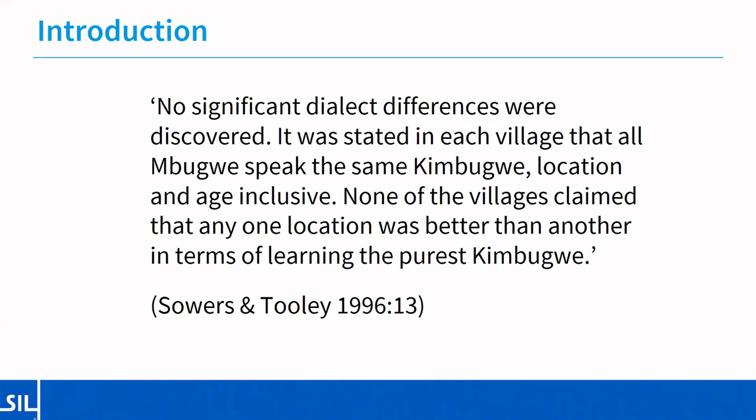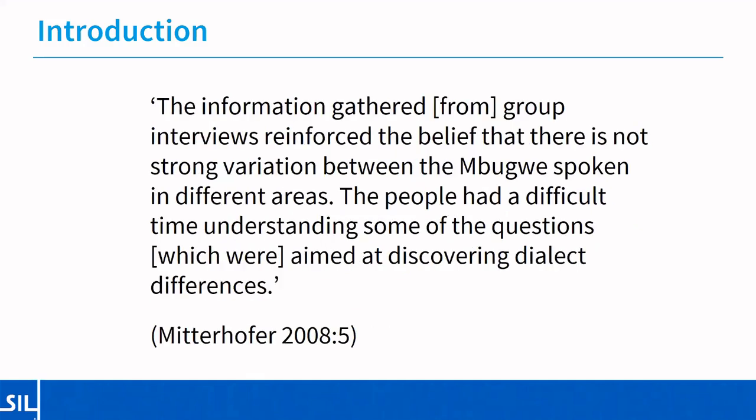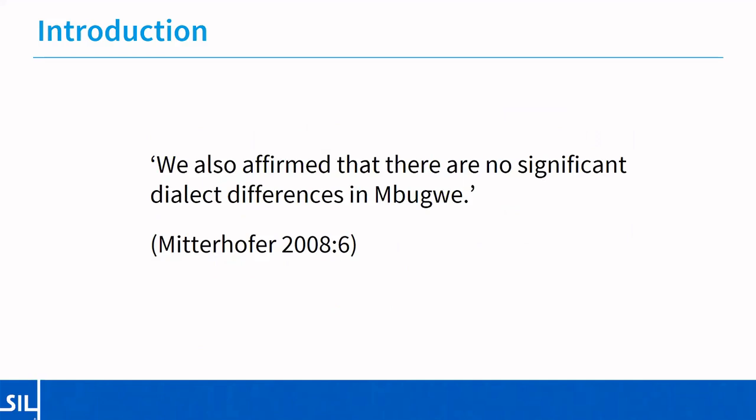None of the villagers claimed that any one location was better than another in terms of learning the purest Kimbukwe. This was verified in a follow-up survey in 2008 where the information reinforced the belief that there's not strong variation between the Mbukwe spoken in different areas, and people had a difficult time understanding questions aimed at discovering dialect differences. The final conclusion was that there are no significant dialect differences in Mbukwe. There is however variation in the pronunciation of certain sets of words, which has prompted a lot of discussion amongst Mbukwe colleagues regarding how those words should be spelled.